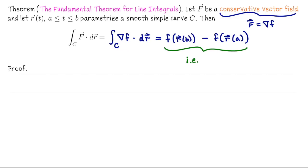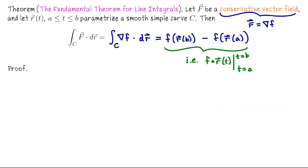If it helps, you can think of this as little f of r evaluated at b, subtract off evaluating at a. This should remind you of the fundamental theorem of calculus because it's saying if we want to do this integral of something which feels like a derivative — in this case the gradient of a scalar valued function — then all I have to do is just plug the endpoints into that scalar valued function.